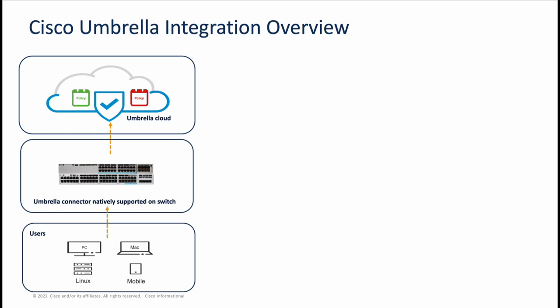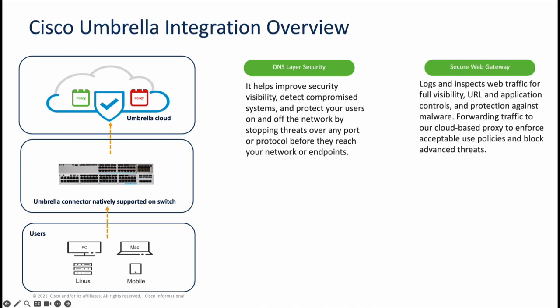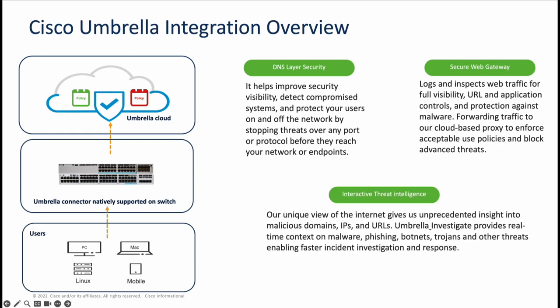Let's take a look at some features that Umbrella provides. We have DNS layer security, which helps improve security visibility and detect compromised domains, protecting users from establishing connections with these domains. We also have a secure web gateway, used to log and inspect web traffic for full visibility and URL and application controls. And finally, we have interactive threat intelligence, which is unique to Cisco Umbrella — giving extensive insight into all the malicious domains, IPs, and URLs being recorded, enabling more accurate predictions to protect your network.